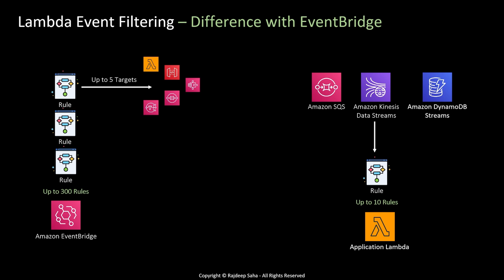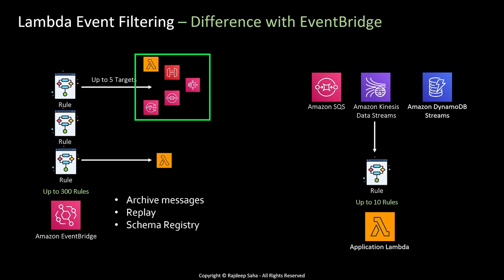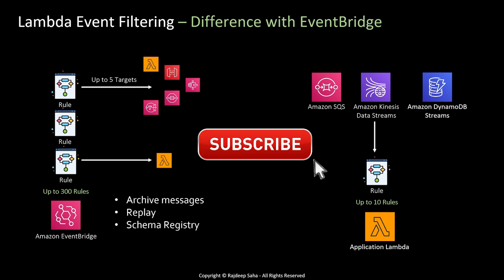With EventBridge, the rules are on the event bus and you can have up to 300 rules, each invoking up to five targets. Messages satisfying certain criteria can be sent to Lambda one, while other messages satisfying different criteria — or a catch-all rule — can be sent to another Lambda. No messages need to be discarded. On top of that, EventBridge can archive and replay messages, has a schema registry, and integrates with many AWS services including Lambda, API Gateway, Step Functions, SQS, and SNS.